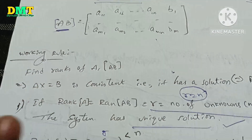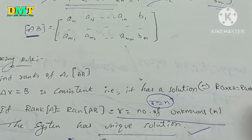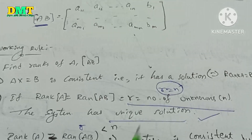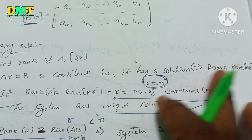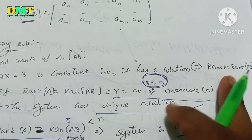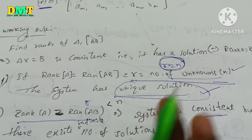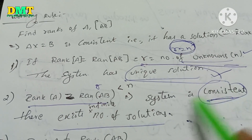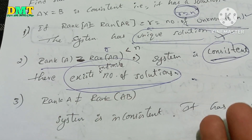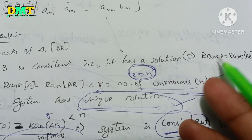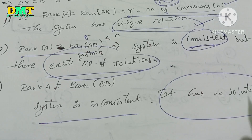So when AX equals b is consistent, rank A equals rank [A|b]. If rank equals n, it is a unique solution. If r is less than n, the system is consistent but has infinite solutions. If rank A is not equal to rank [A|b], then the system is inconsistent — it has no solution.